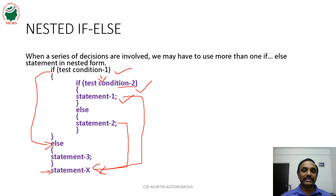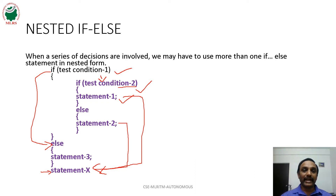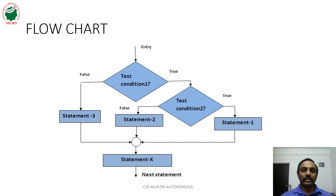In the nested if-else case, there is a possibility of a dangling else problem. What is the dangling else problem? For every else, there must be a corresponding if statement. If that corresponding if is not present in our code, then the dangling else problem will arise. So if you are writing an else statement, you clearly have to ensure there is a corresponding if statement.